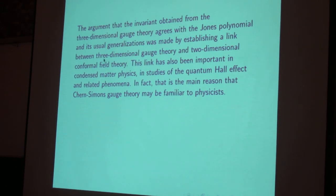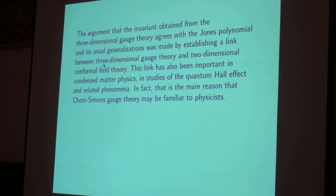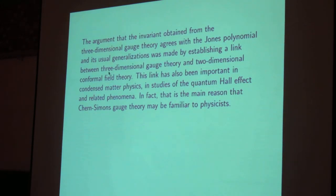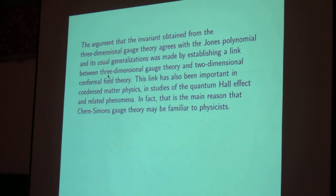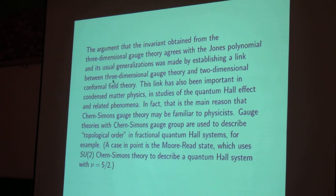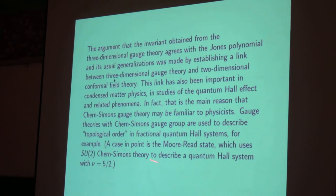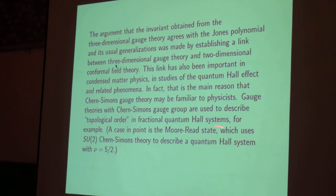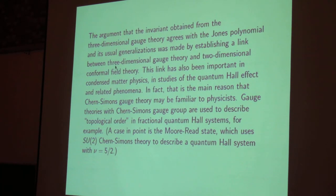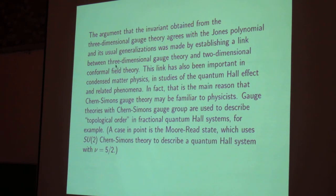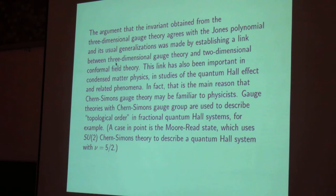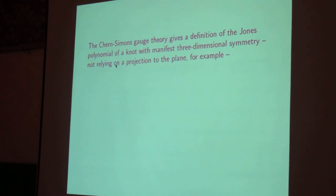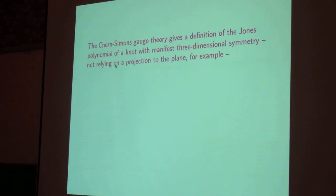So the role of Chern-Simons gauge theory in fractional quantum Hall effect is probably the main reason it might be familiar to physicists. So gauge theories with Chern-Simons terms were used to describe what's called topological order in fractional quantum Hall systems. For example, there's something called the Moore-Read state which uses non-abelian Chern-Simons theory to describe a particular system.